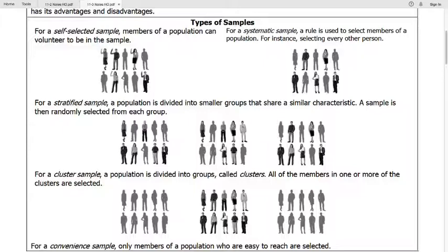And then we've got a cluster sample. A cluster sample is when we divide the population into groups, but then we only take one of those groups.